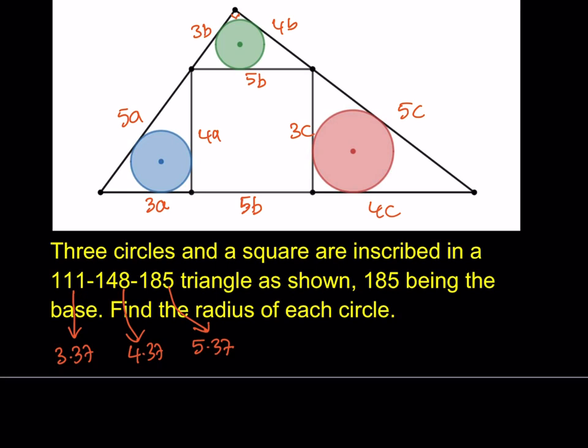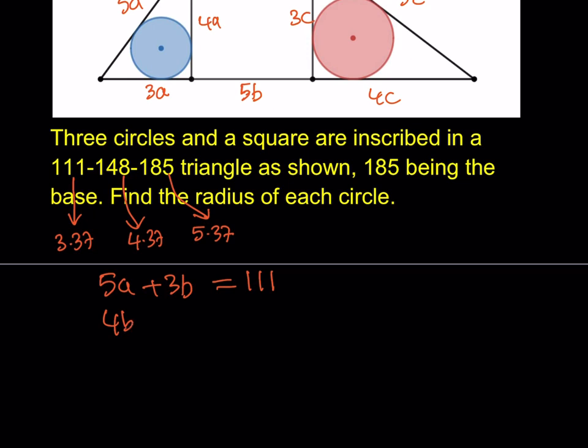The next thing I'm going to do is set up a system of equations. Since the lengths are given, I should be able to solve for them. I have 5a plus 3b, that's the shorter leg, which is 111. And then I have the longer leg, which is 4b plus 5c, that should be 148. And the hypotenuse is 3a plus 5b plus 4c equals 185.